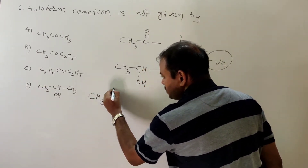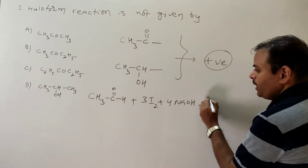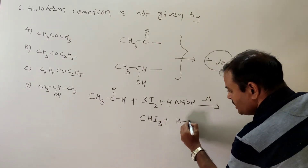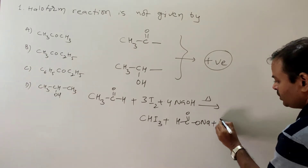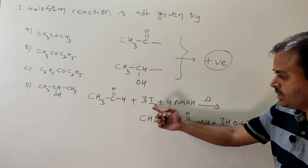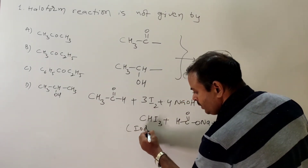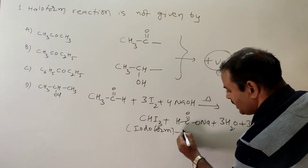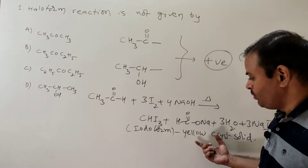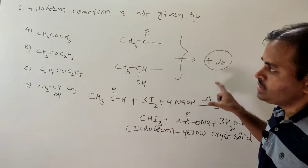For example: CH3COH + 3I2 + 4NaOH with heating gives CHI3 + HCOONa + 3H2O + 3NaI. This is the haloform reaction. Since iodine is used, this is called the iodoform reaction, and the product CHI3 is iodoform. Iodoform can be identified as a yellow crystalline solid.